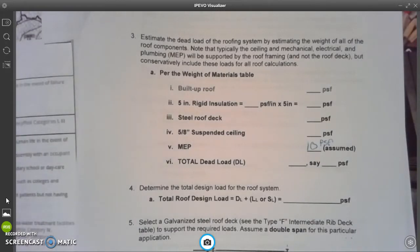Now we have to find the values for the rest of these things: built-up roof, the 5 inches of rigid insulation, the steel roof deck, the suspended ceiling. And once we have that, what we're going to do is we're going to total all those values up and we're going to get a total dead load calculation.